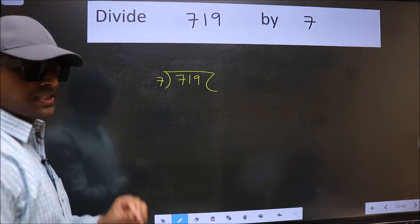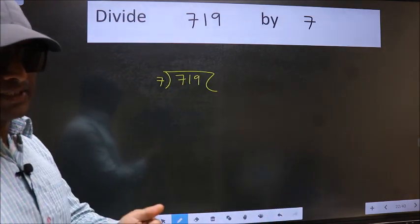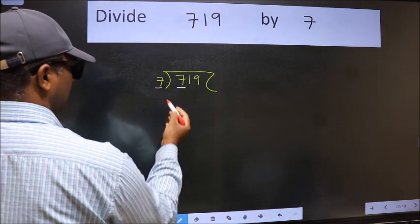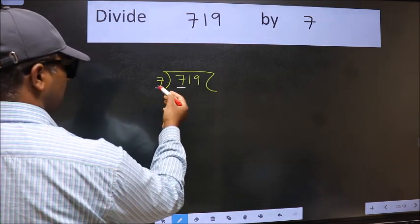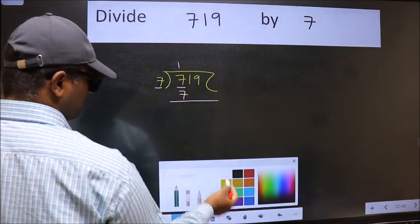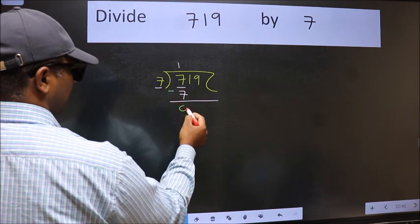This is your step 1. Next, here we have 7 and here 7. When do we get 7 in the 7 table? 7 once, 7. Now we should subtract. We get 0.